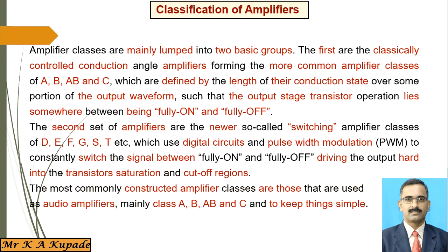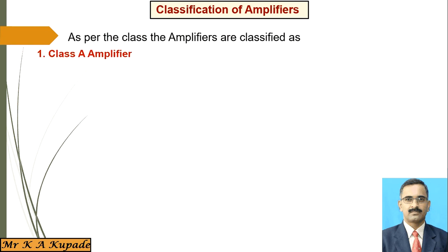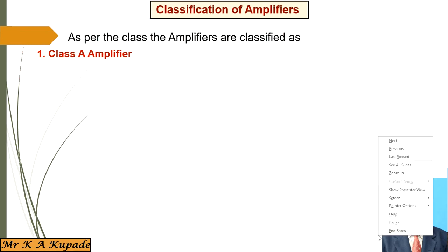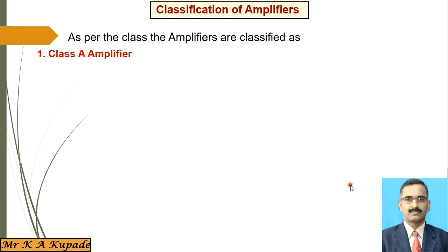The first category — classes A, B, AB, and C — is used mainly for audio amplifiers and other amplification purposes. The second category is for switching purposes. Now we will discuss what each class means: class A, class B, class AB, and class C amplifiers. I will briefly introduce each of these.